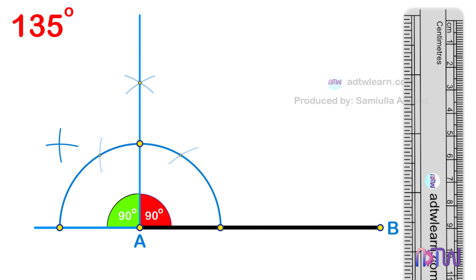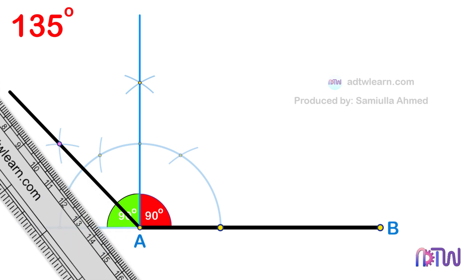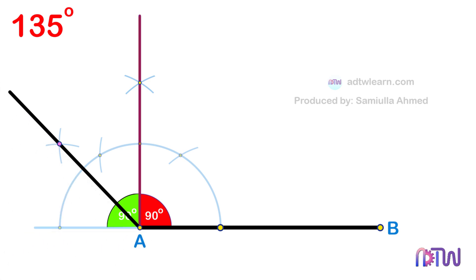After this, draw a line passing through this intersection point from endpoint A of the line segment. We can see the angle up to this line is 90 degrees plus this additional 45 degrees, which equals 135 degrees. Therefore, the angle made by this line with the horizontal line is 135 degrees.